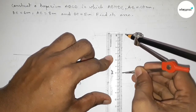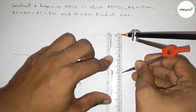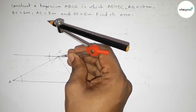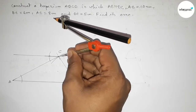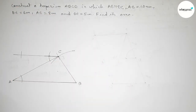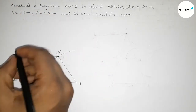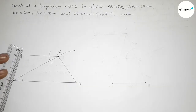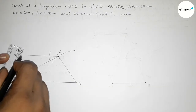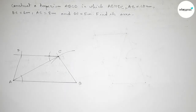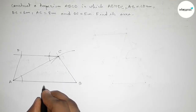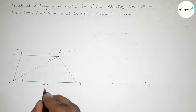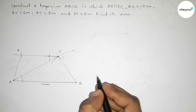Now taking the length DC equal to 6 centimeter and putting the compass here and cutting here. Taking point D here, then joining A and D.